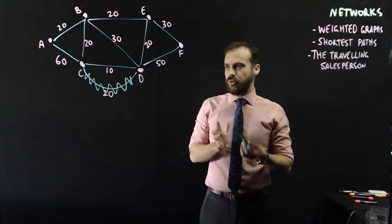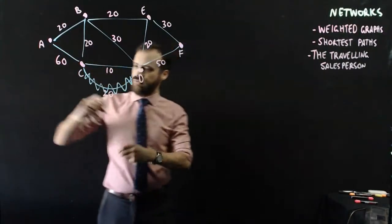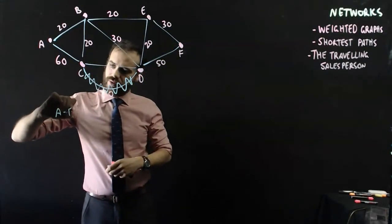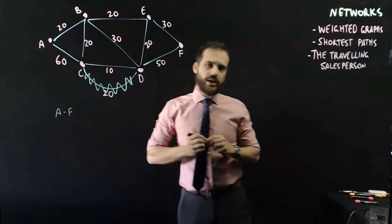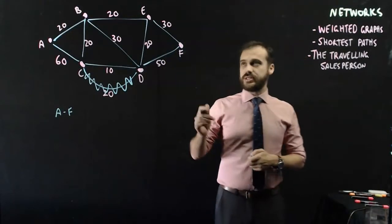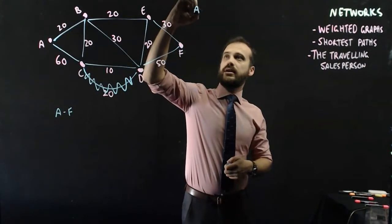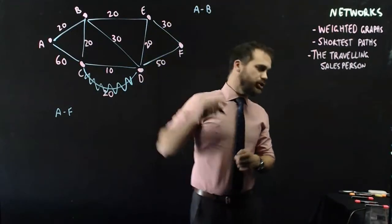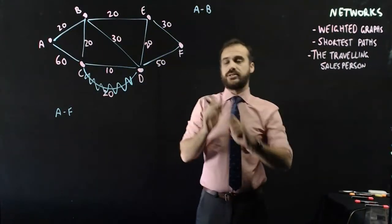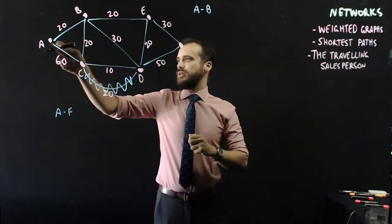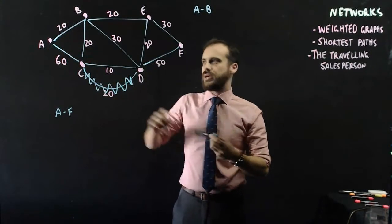Now, let's just do a problem. Let's try to get from A to F in the shortest way possible. I'm just going to start at point A and I'm going to consider what is the shortest way to get from A to B. Okay, there's only one way, well, multiple ways to get from A to B.